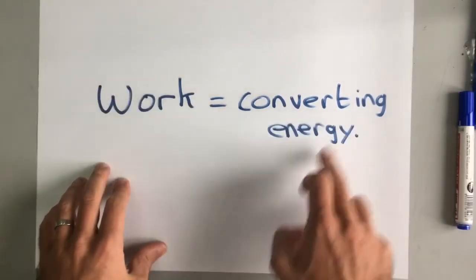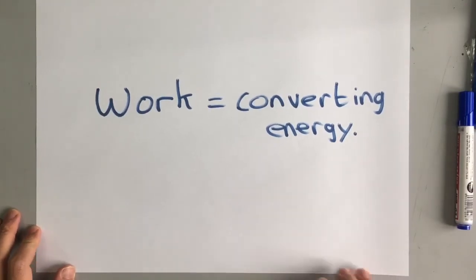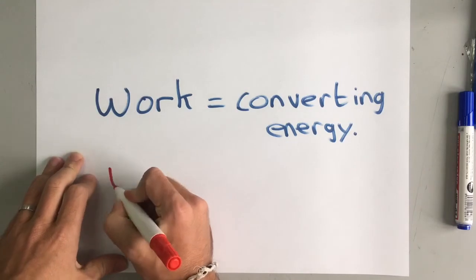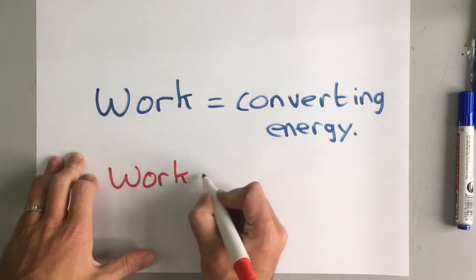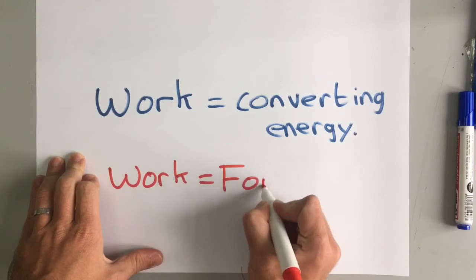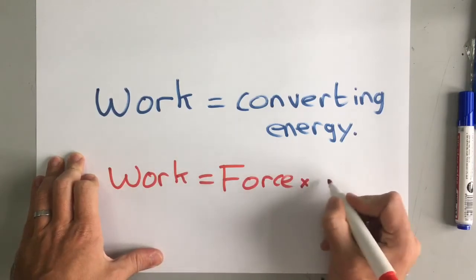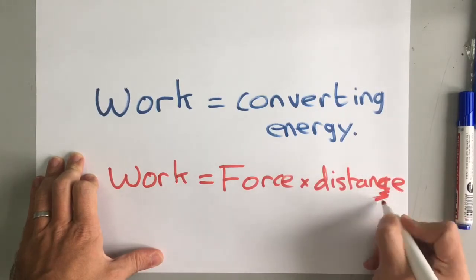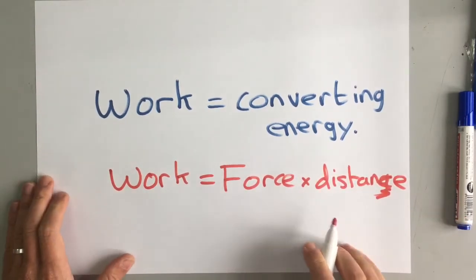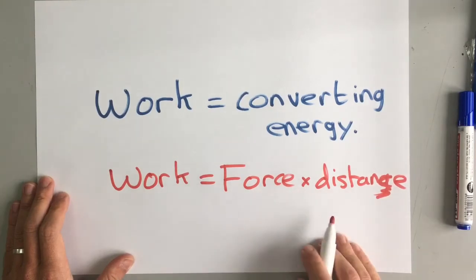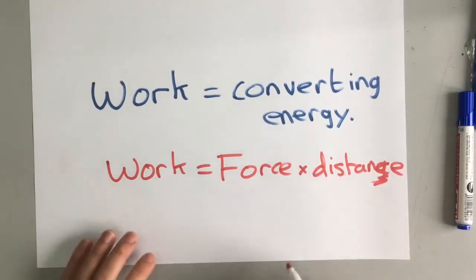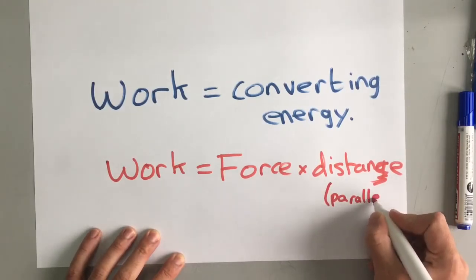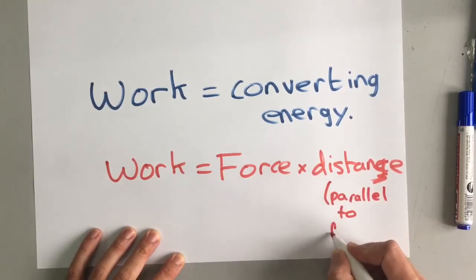Any work that you do is converting energy from one form to another. Now we can talk about work with numbers by saying that work is the force that is put in times the distance that that force moves an object. So work done is force times distance. Now that distance has to be in the same direction as the force. So we say that the distance is parallel to the force.